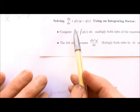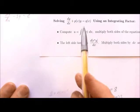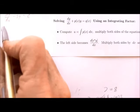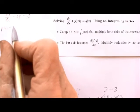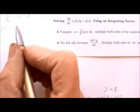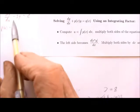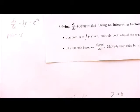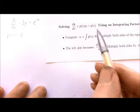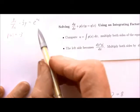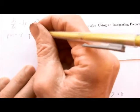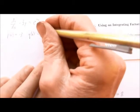Looking at our equation, it's important to identify what p and q are. For us, p(x) is just negative 3 — it's the coefficient in front of the y. And q(x) would be e^(4x).